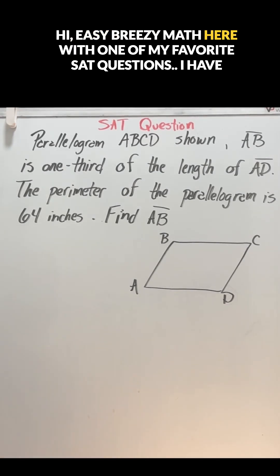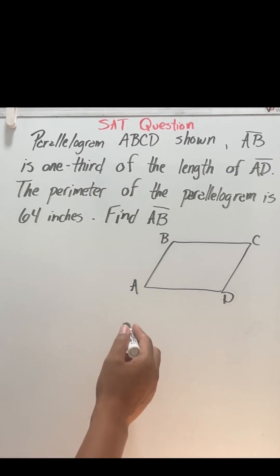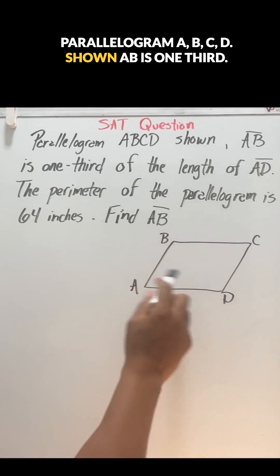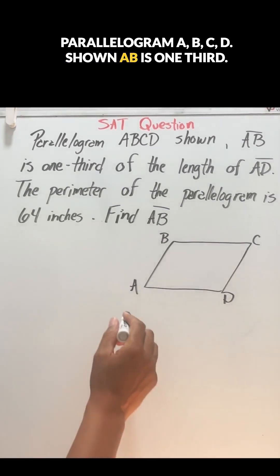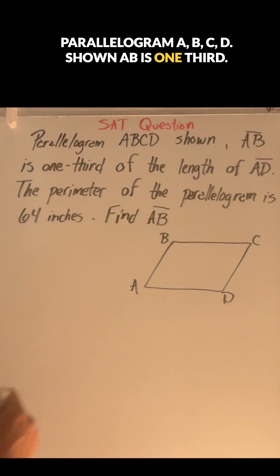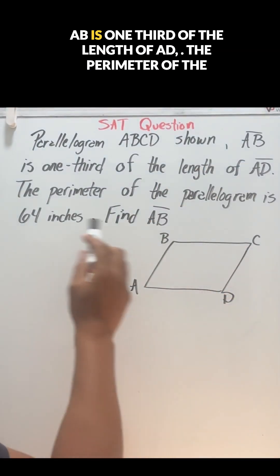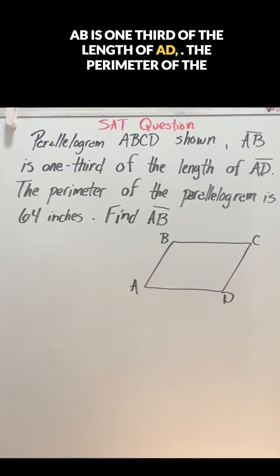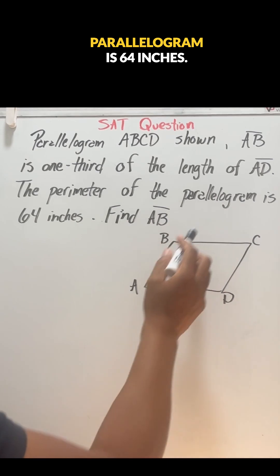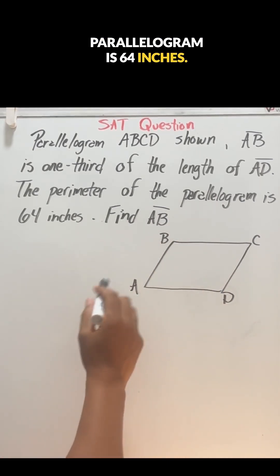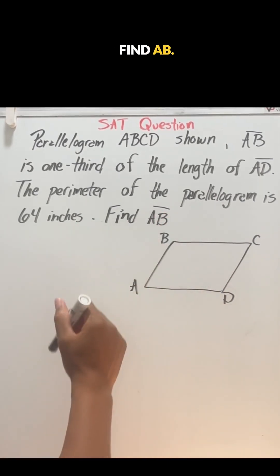Hi, Easy Breezy Math here with one of my favorite SAT questions. I have parallelogram ABCD shown. AB is one third of the length of AD. The perimeter of the parallelogram is 64 inches. Find AB.